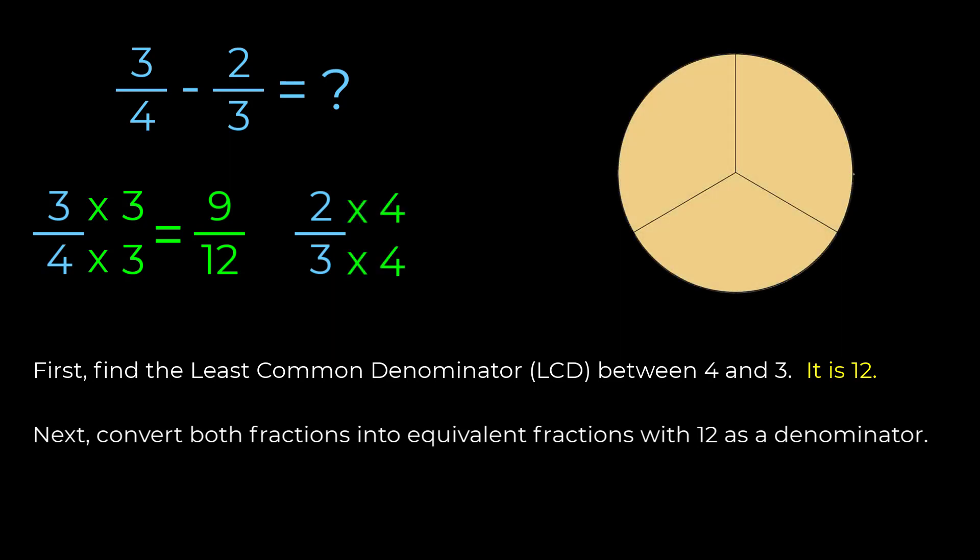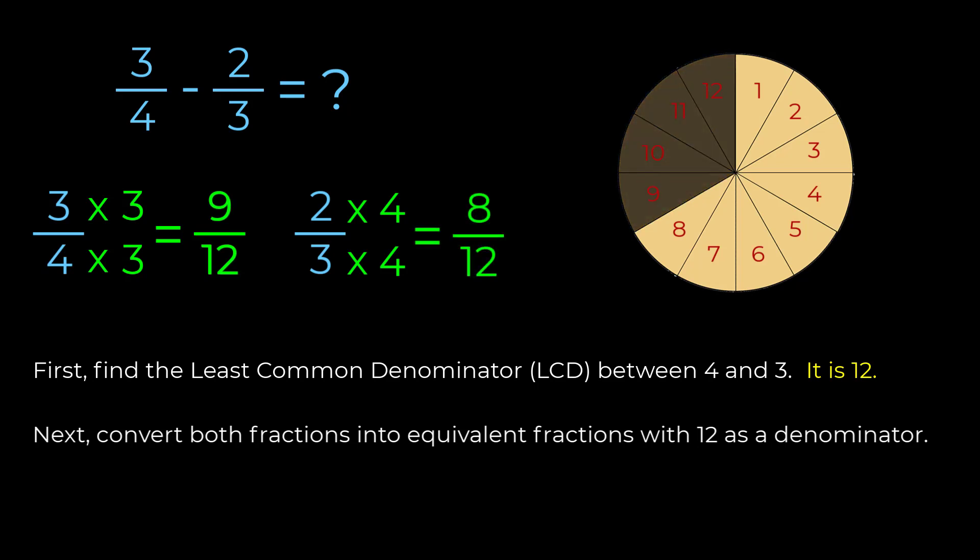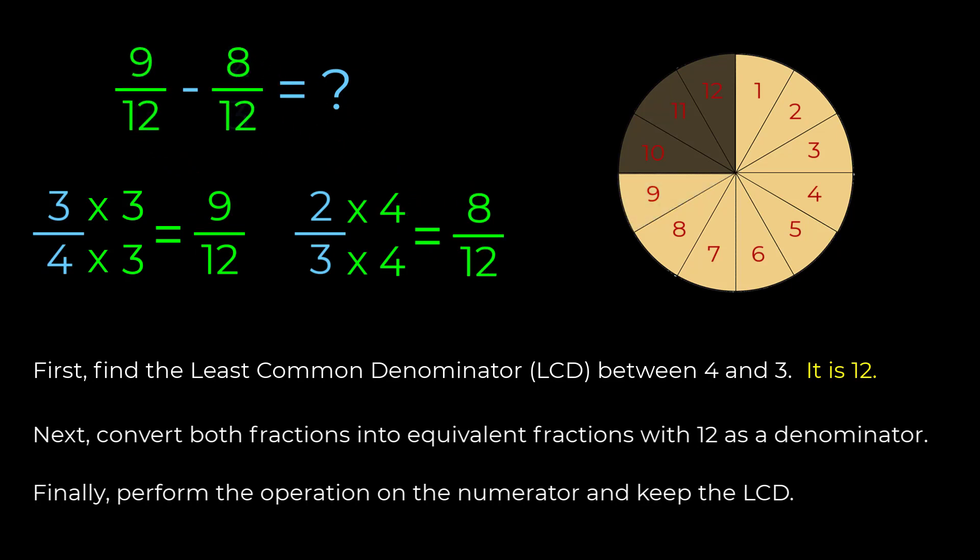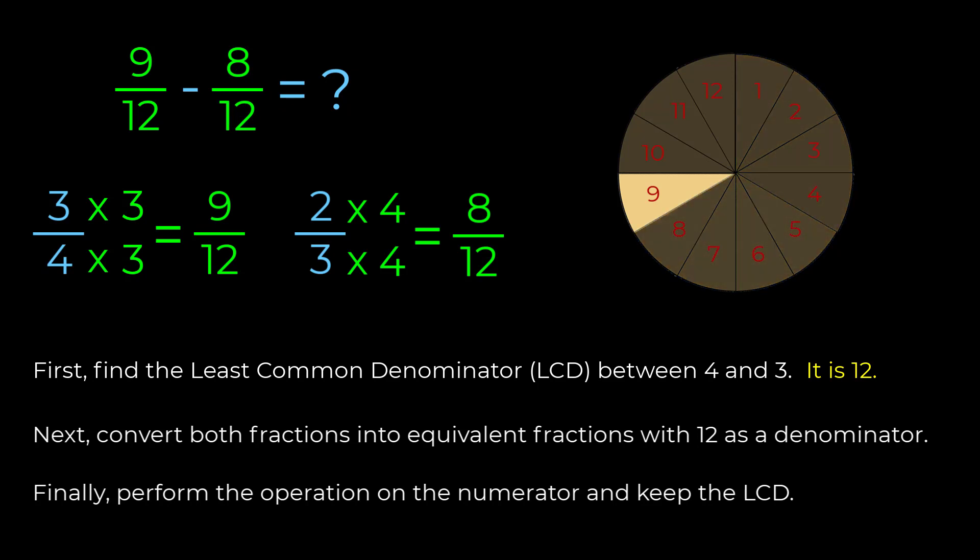Again, think of it as dividing each of the thirds of pizza into four slices. My two thirds of a pizza becomes equivalent to eight over twelve. Now the math is simple. Our original problem of three quarters minus two thirds is now equivalent to nine over twelve minus eight over twelve. If you have nine pieces and you gave eight of them away, you are left with one twelfth of a pizza. At least you won't get fat.